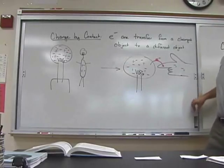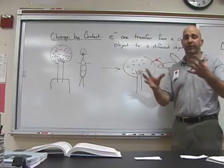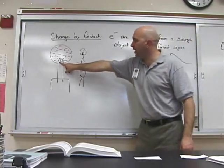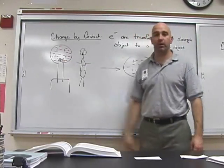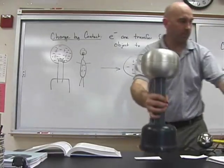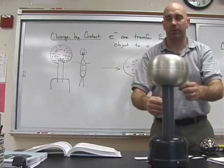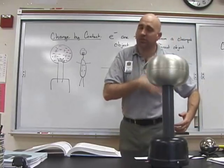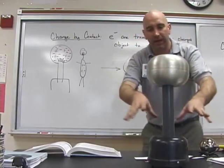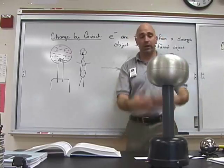The second is called charging by contact. And there's this device that students love. It's called a Van de Graaff generator. And basically, it's a large steel sphere set atop this column that inside has a piece of rubber that, in essence, rubs against a shirt over and over and over again, and dumps all of those electrons into this big metal sphere.